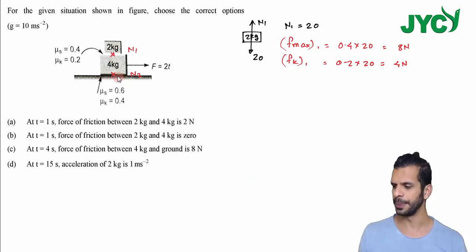Now similarly we have to calculate here. So fmax2 is equal to mu_s which is 0.6 into normal force. Normal force here is 4 plus 2 is 6, so 60. So 60 gives us 36 newton.